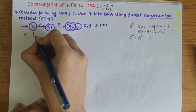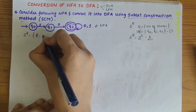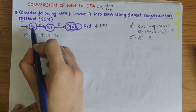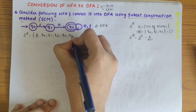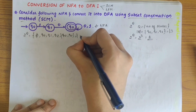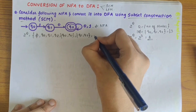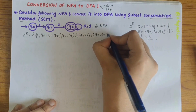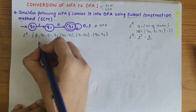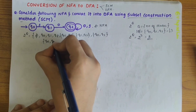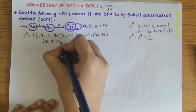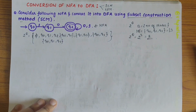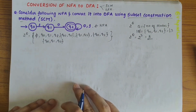Let's write what the combinations are. First it could be null (∅). Next, Q0, Q1, and Q2 individually. Then Q0,Q1 is possible, then Q1,Q2, then Q0,Q2, and finally Q0,Q1,Q2. So these 2^Q are all the possible states.